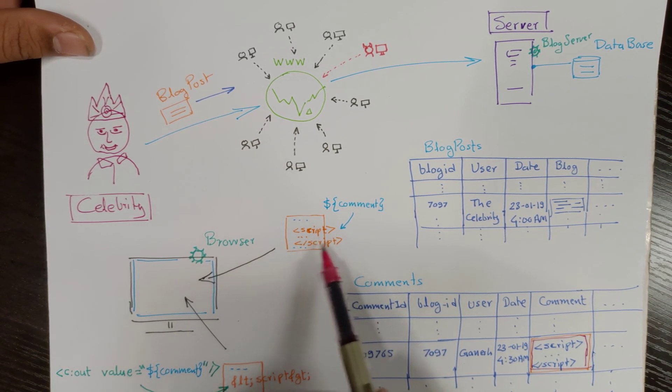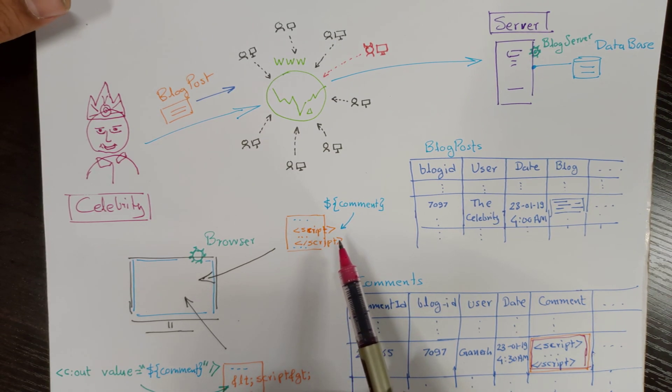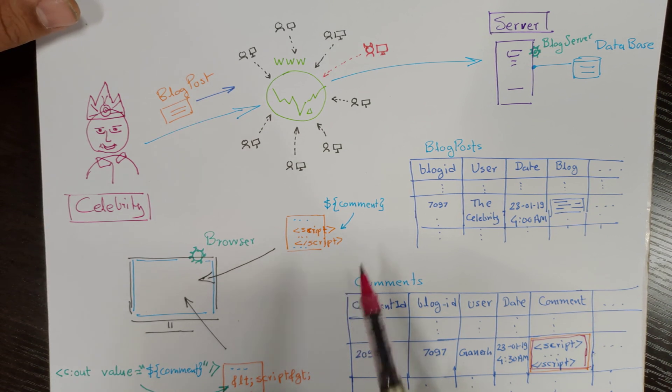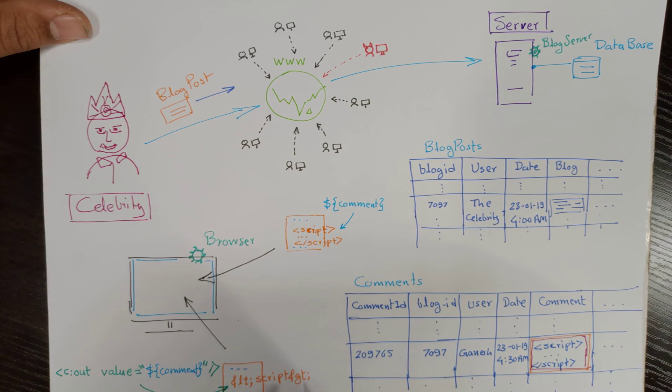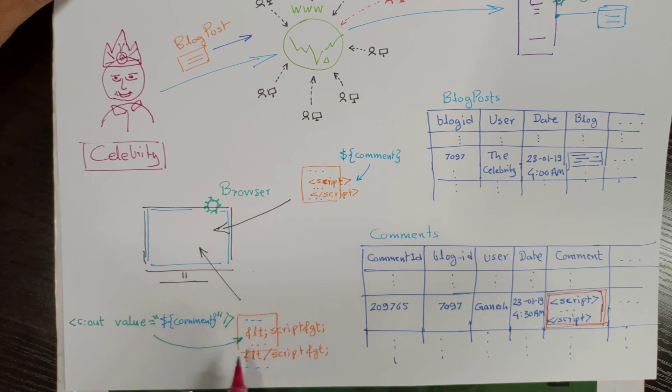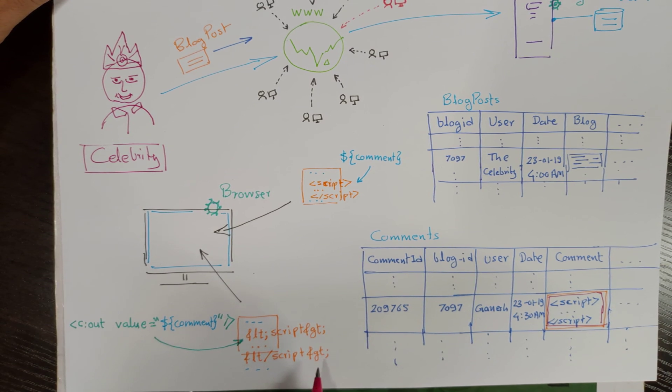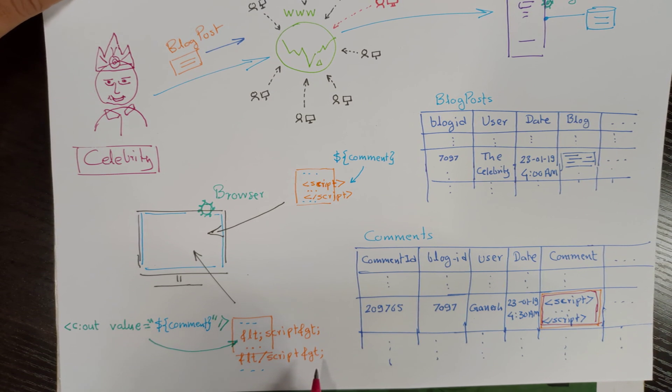Now the JSTL c:out with EL comes into the picture. The c:out escapes the tags, angular brackets, as I demonstrated in the previous video. If such escaped tag-based string receives to the browser, then the browser treats it just like a simple text string.